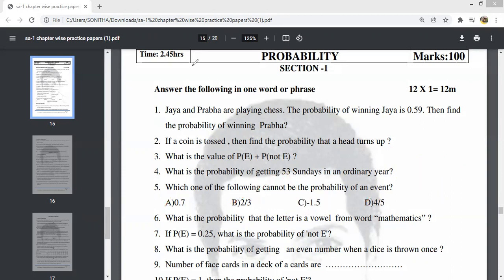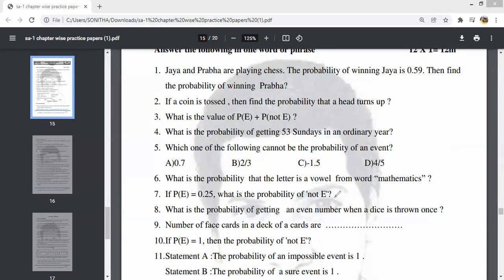When a dice is thrown once, the possible outcomes are 1, 2, 3, 4, 5, 6. Even numbers are 2, 4, 6. Three out of six, so 1 by 2 is the answer.